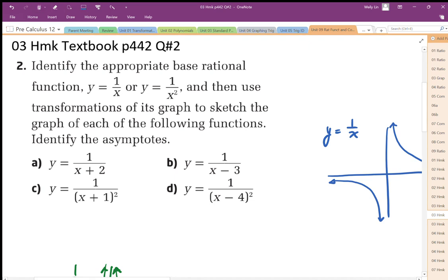Question number two on page 442 says identify the appropriate base rational function, 1 over x or 1 over x squared, then use the transformations to sketch the graph of the following.